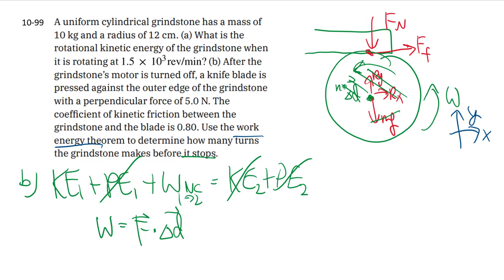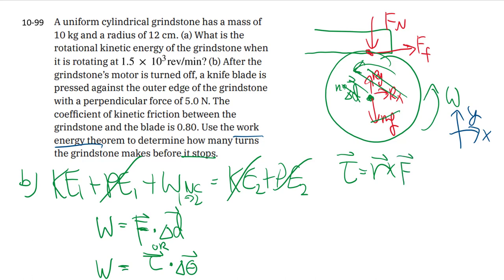Work, as we used to compute it, involves the dot product F dot delta-d. It shouldn't surprise you that there is a rotational equivalent where we replace linear displacement with angular displacement and replace force with torque. Now that we're talking about torque, it's defined with the cross product r cross F, where r is the displacement vector from the rotation axis to the point where the force acts. For the normal force, r and Fn are parallel, so the cross product gives zero — no torque.